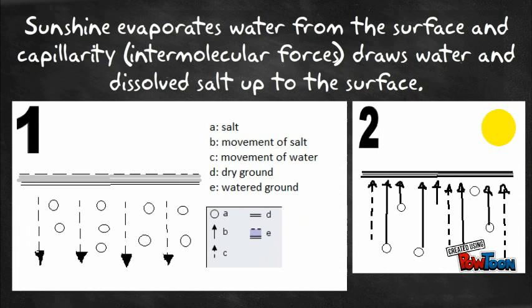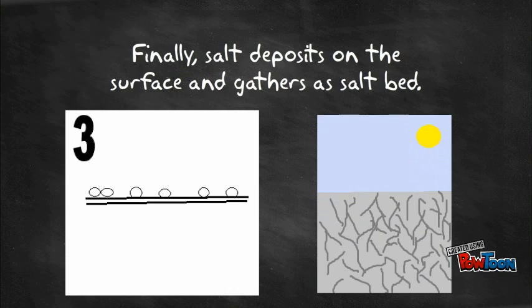Sunshine evaporates water from the surface and capillarity draws water and dissolved salt up to the surface. Finally, salt deposits on the surface and gathers a salt bed.